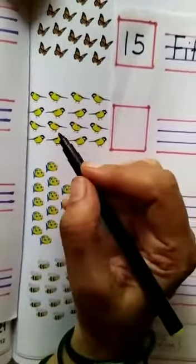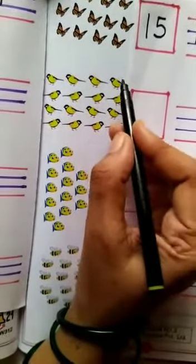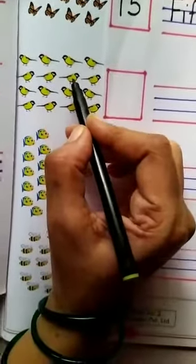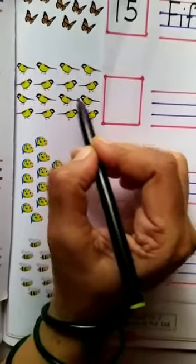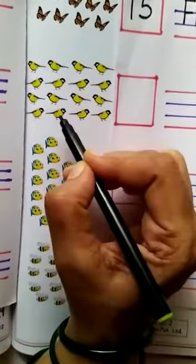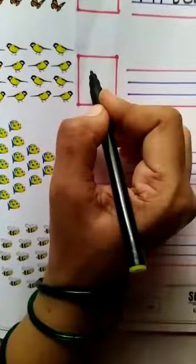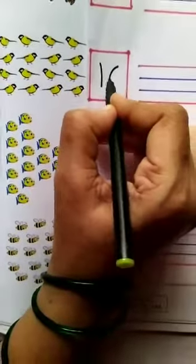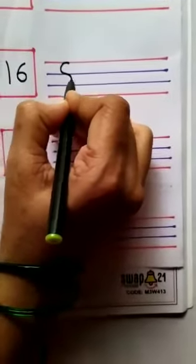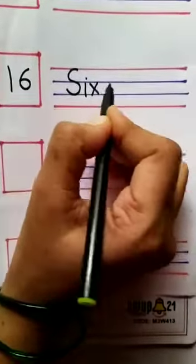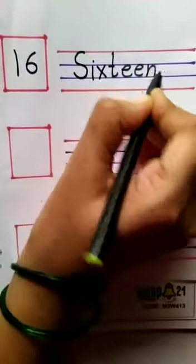Now we will count the birds. 1, 2, 3, 4, 5, 6, 7, 8, 9, 10, 11, 12, 13, 14, 15, 16. I will write here number 16 and number name 16: S, I, X, T, E, E, N. 16.